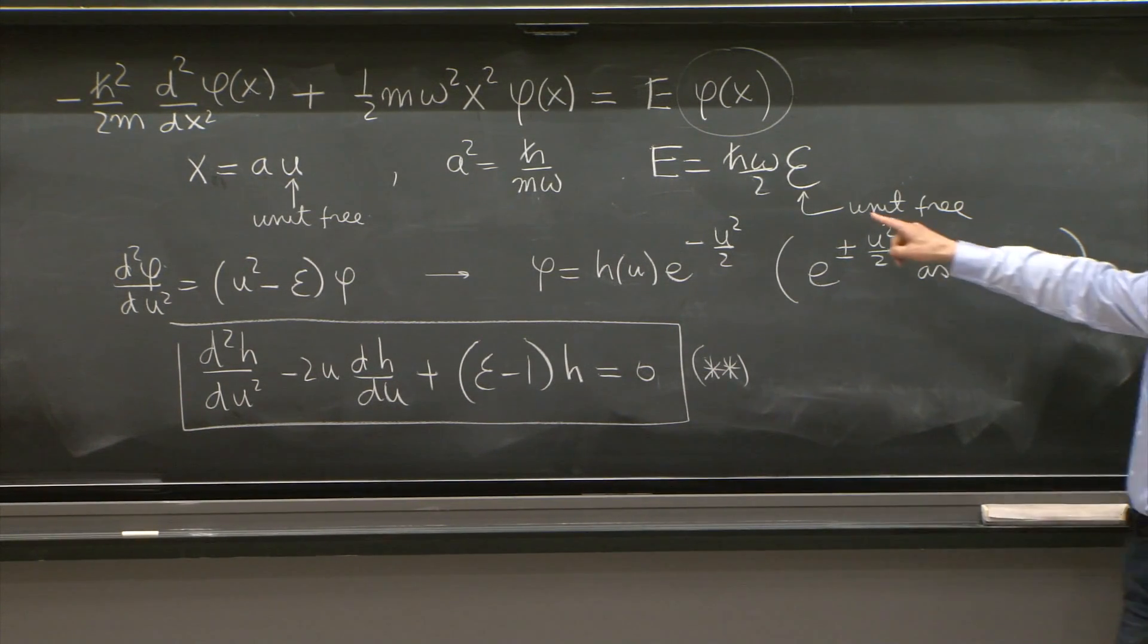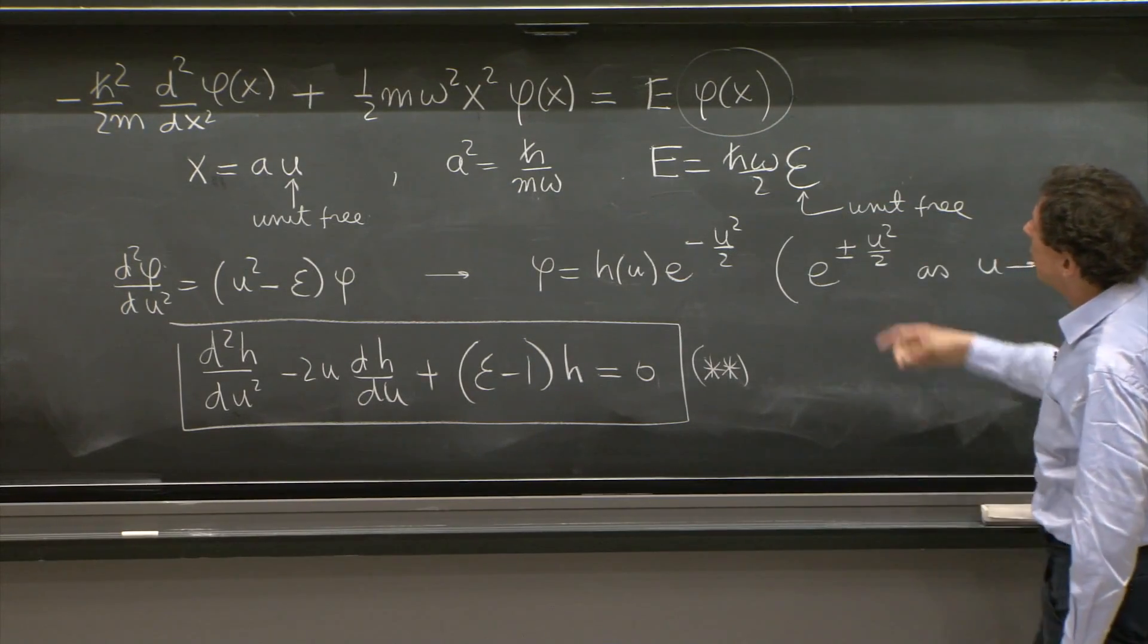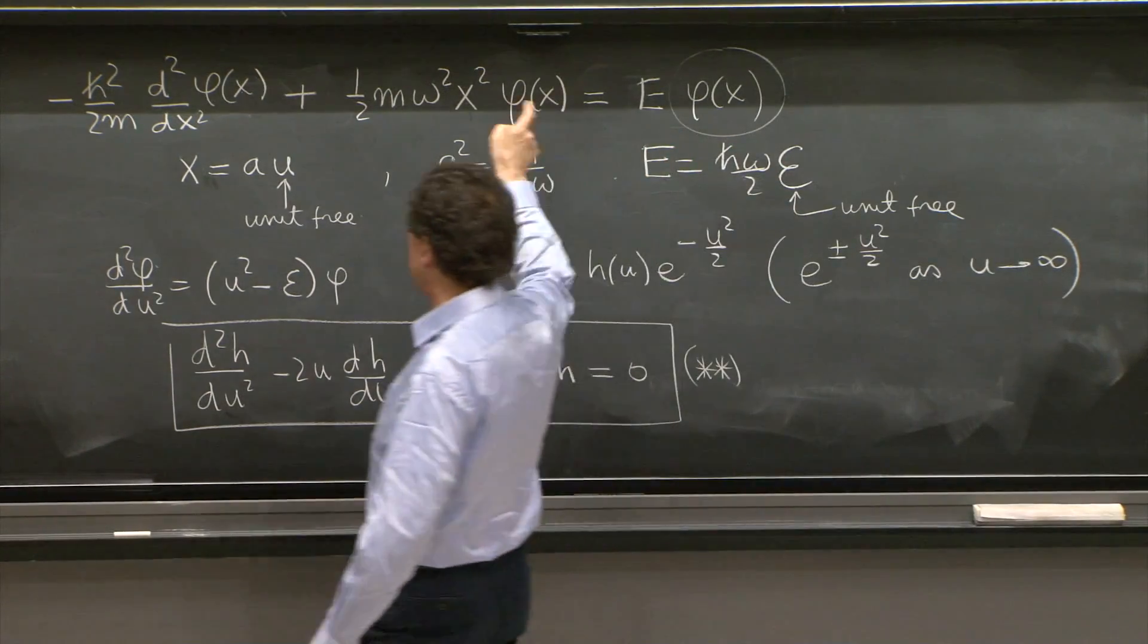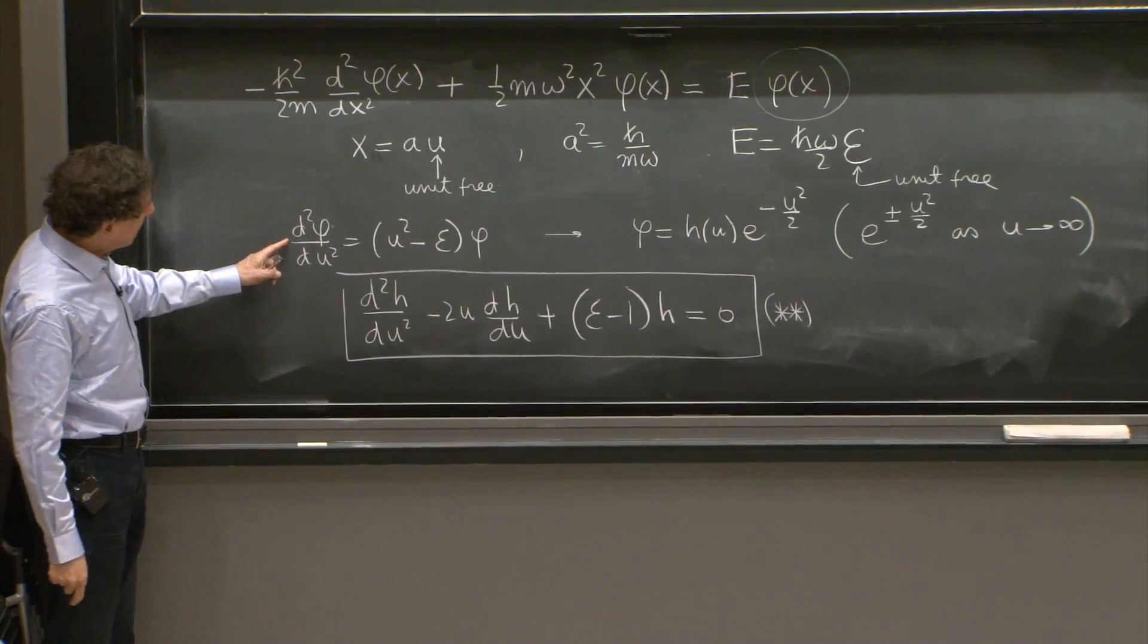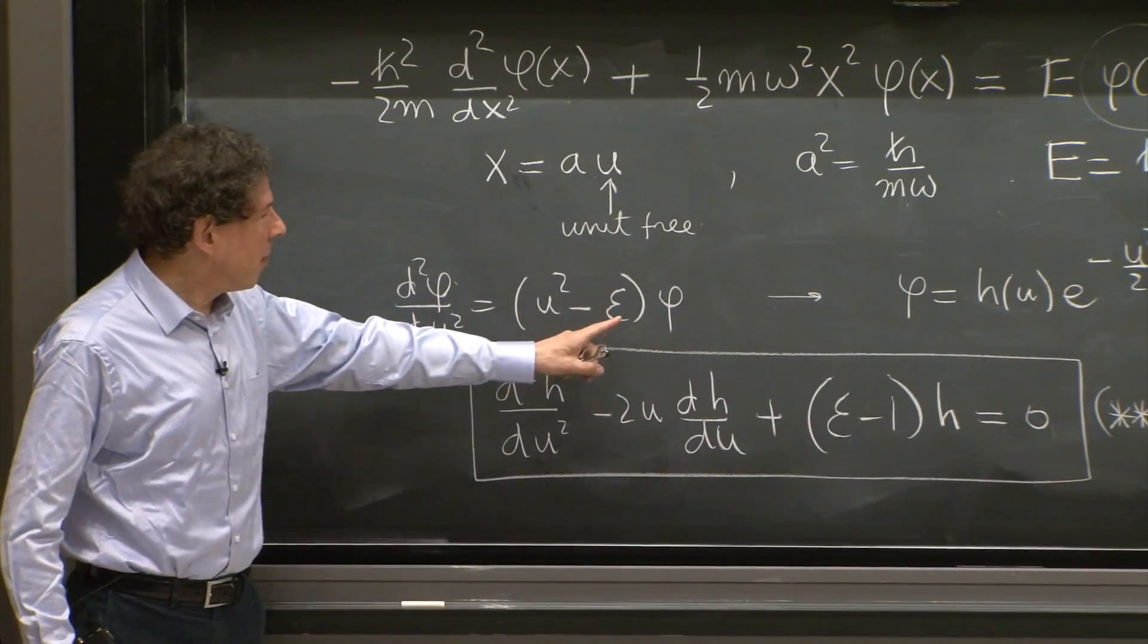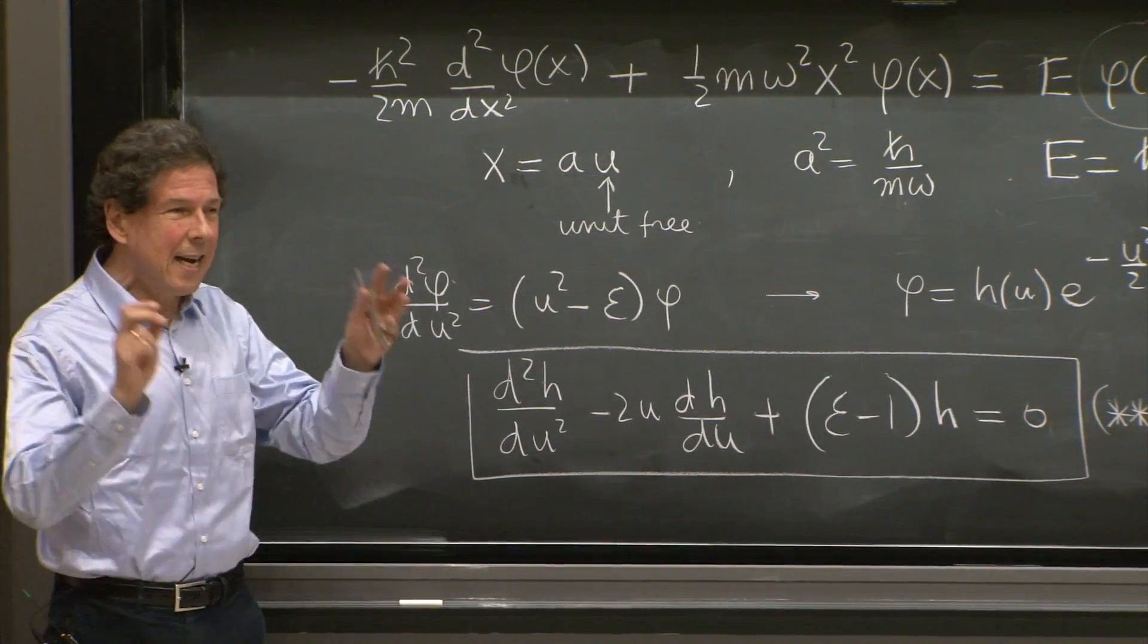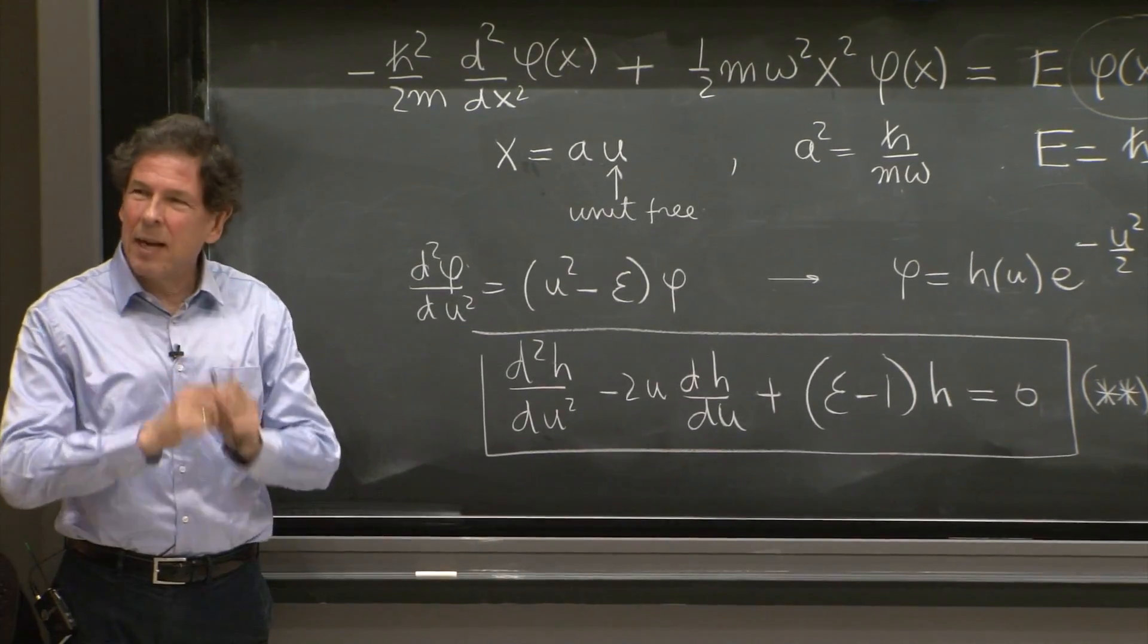We also defined a unit-free energy, calligraphic E, in terms of which the real energies are given by multiples of h omega over 2. So the problem has now become, and this whole differential equation turns into this simple differential equation, for phi as a function of u, which is a new rescale coordinate, and where the energy shows up here. And for some reason, this equation doesn't have normalizable solutions unless those energies are peculiar values that allow a normalizable solution to exist.